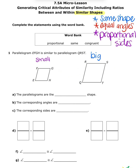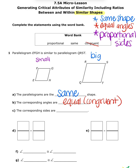The parallelograms are the same shape, the corresponding angles are equal — also known as congruent — and the corresponding sides are proportional. Proportional just means if I set up a proportion, they will come out equal.